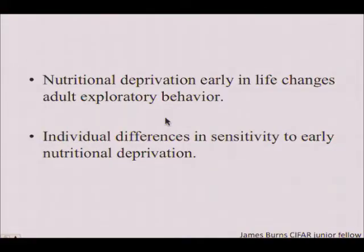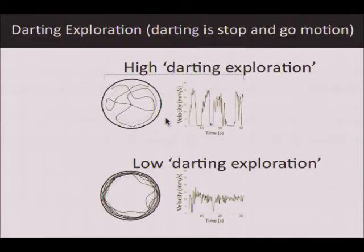James Burns, a postdoc and CIFAR junior fellow, wanted to ask this question of adult flies. He nutritionally deprived larvae early in life, then asked what happens to adult exploratory behavior. He used an open field apparatus — small, empty — and introduced individual flies. He found some flies are high darting explorers: they move toward the center, change velocity, dart, stop, and start. Others are low darting explorers, hugging the edges and going around in circles. This is more like a rover versus a sitter pattern.